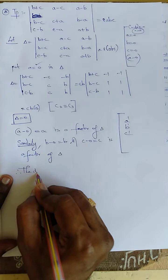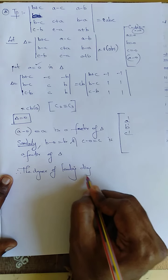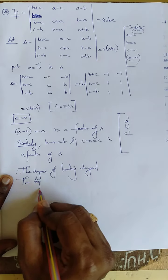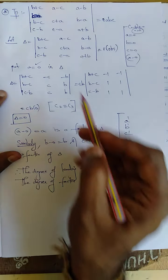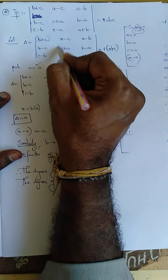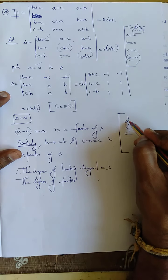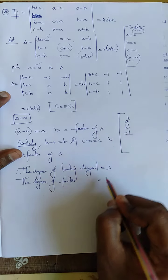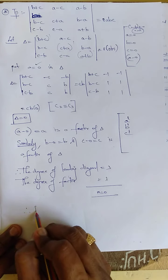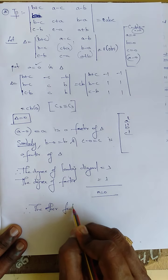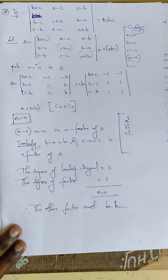The degree of the leading diagonal is: power 1, power 1, power 1 — so the degree is 3. The degree of the factors a, b, c is also 1+1+1 = 3. Therefore m equals 0, and the remaining other factor must be a constant k.